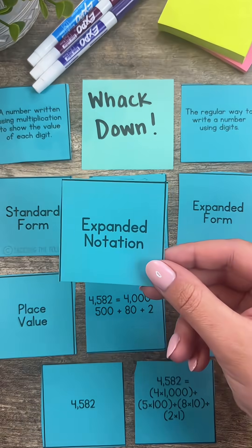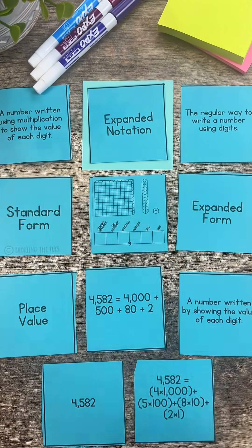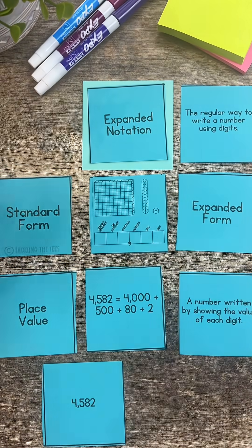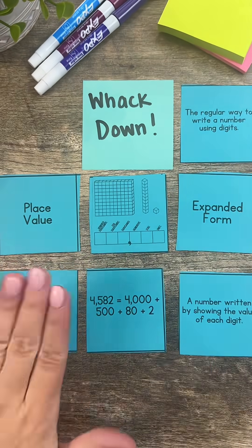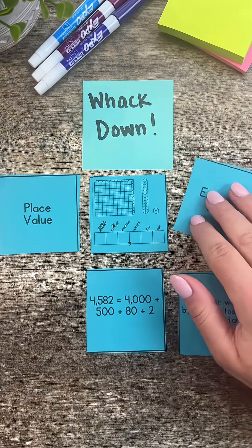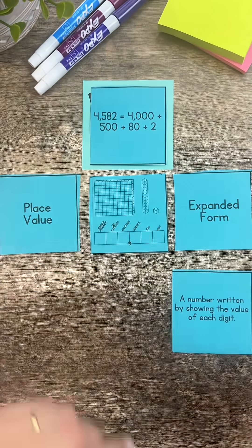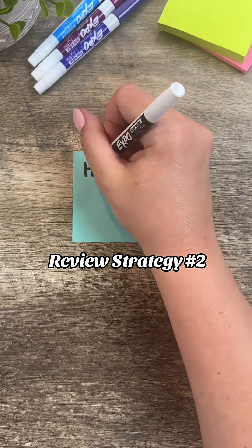Here's the first strategy out of three. It's called Whack Down, and students are going to compete with each other in their group. The teacher will present a vocabulary word and students have to whack down the matching model and definition. The student with the most cards wins.